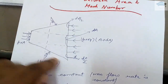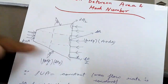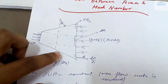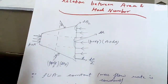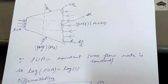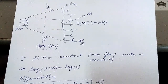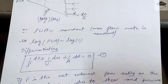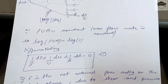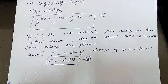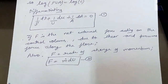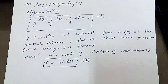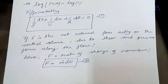Since mass flow rate is constant, that is rho·u·A is constant, taking the log and differentiating we get: (1/ρ)dρ + (1/u)du + (1/A)dA = 0. This is equation number one. The net external force F acting on the control volume due to shear and pressure force along the flow direction equals the rate of change of momentum, so F = ṁ·du. This is equation number two.